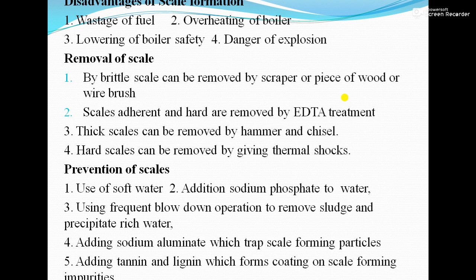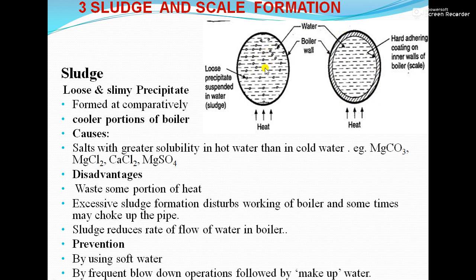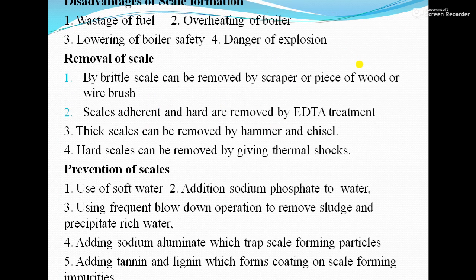Preventions for scale formation: first, use soft water; second, add sodium phosphate to the water; third, frequent blow down operation to remove sludge and precipitate-rich water; fourth, addition of sodium aluminate which traps scale-forming particles; fifth, addition of tannin and lignin which form a coating on scale-forming impurities, keeping them suspended in water so they can be removed by blow down operation.